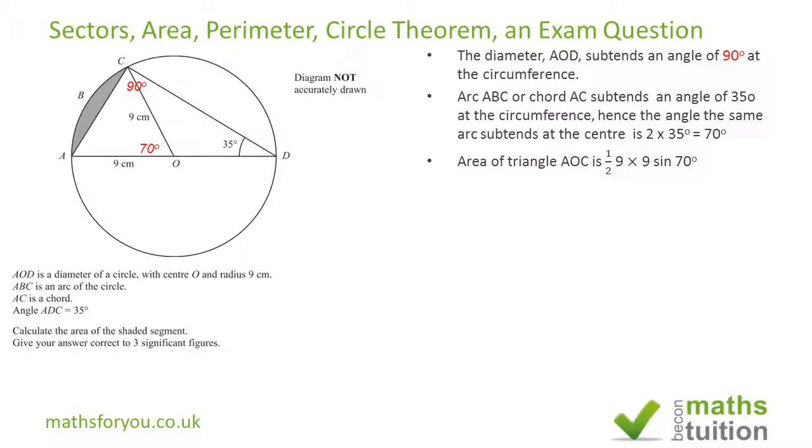Now we need to find the area of this sector. The area of the sector is 70/360 πr², where πr² is the area of the whole circle.